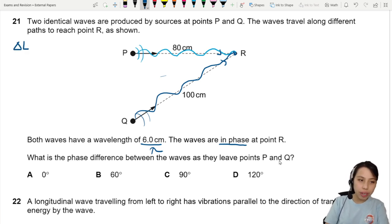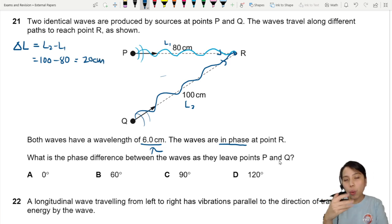So the path difference, or rather the difference in length path one and path two, I'll just take L2 minus L1. Let's call this L1, let's call this L2, whichever longer one. So 100 minus 80 will give us 20 cm. That means one wave travels 20 more cm than the other.